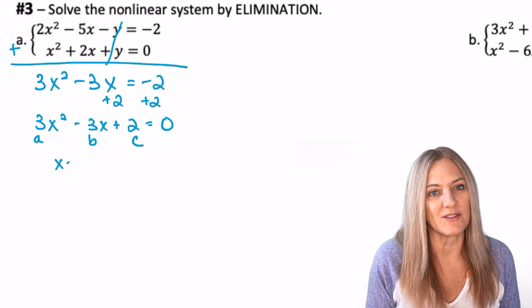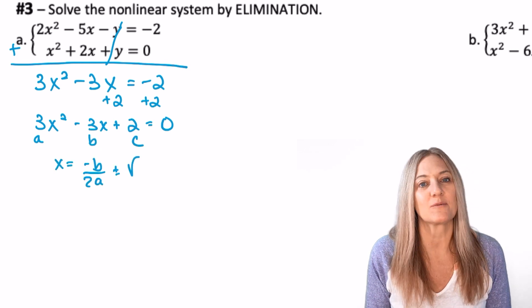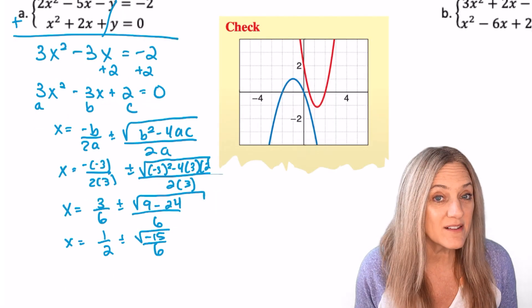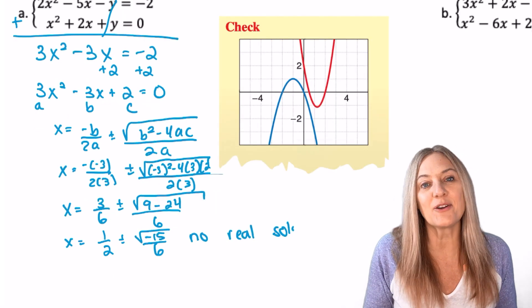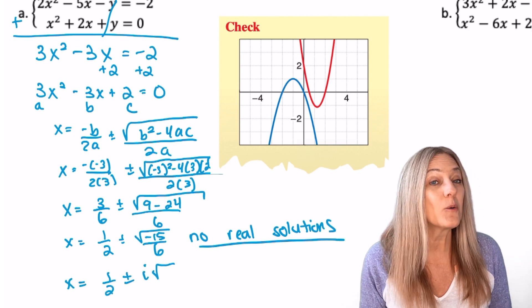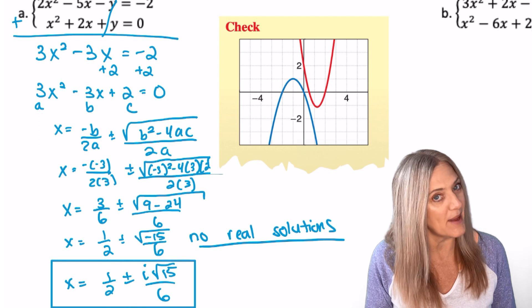And we could use completing the square, but this might be best with quadratic formula. How many real solutions? None. Look at it graphically. The two parabolas never intersect. However, we can clean this up and give imaginary solutions.